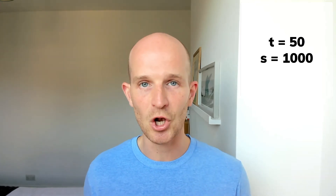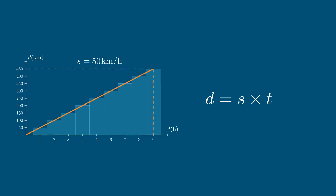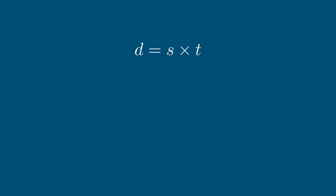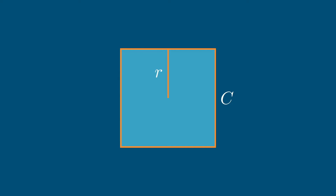So to summarize where we are: the time to go around the world is 50 hours, the speed of the plane is 1,000 kilometers per hour. Plugging into our formula — distance equals speed multiplied by time — gives 1,000 times 50, which is 50,000 kilometers. That's our guesstimate for the full circumference of the Earth.